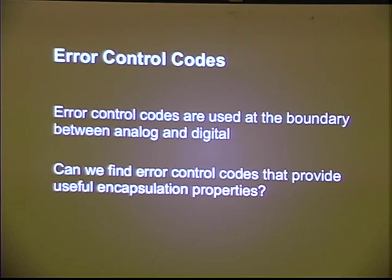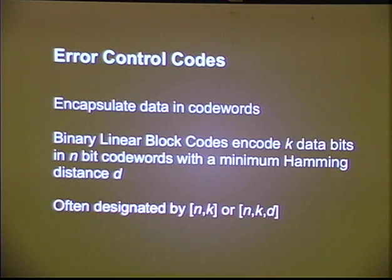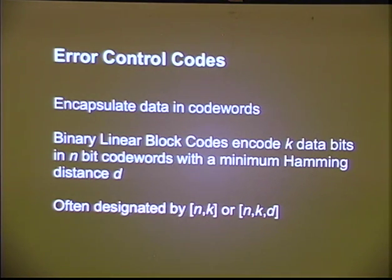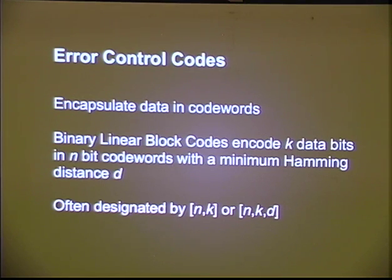What we're interested in with this project is finding error control codes that have particular properties useful for unambiguous encapsulation. The codes we're working with are codes that encapsulate data in words — a code word is a string of bits representing some piece of information. We're dealing specifically with binary linear block codes. There really isn't that much coding theory you have to understand to follow what we're doing.